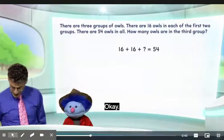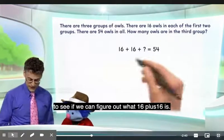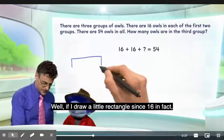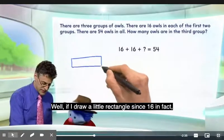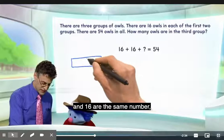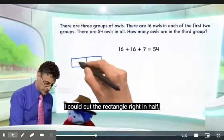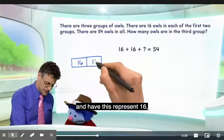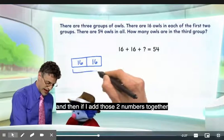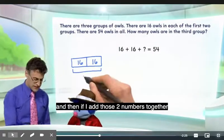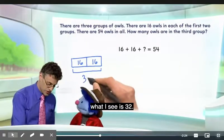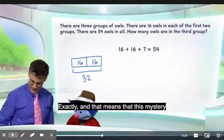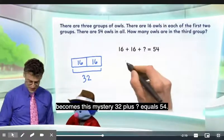Let's draw a little model to see if we can figure out what 16 plus 16 is. If I draw a little rectangle — since 16 and 16 are the same number — I could cut the rectangle right in half: this half represents 16 and this half represents 16. When I add those two numbers together, I see 32. And that means the mystery becomes: 32 plus question mark equals 54.